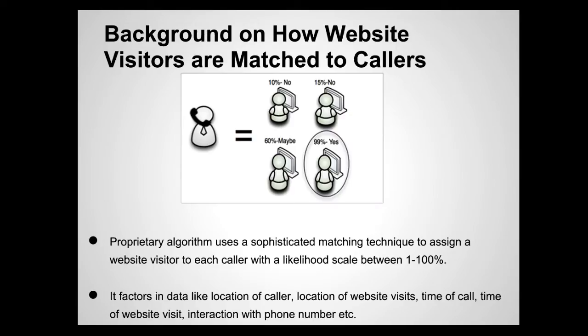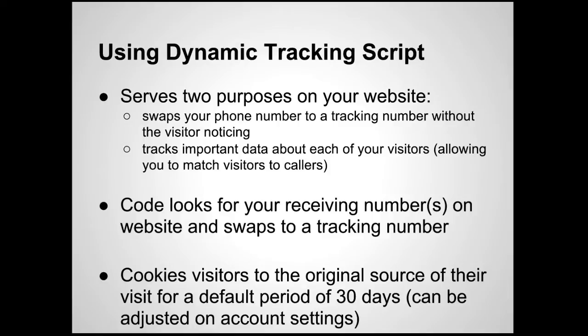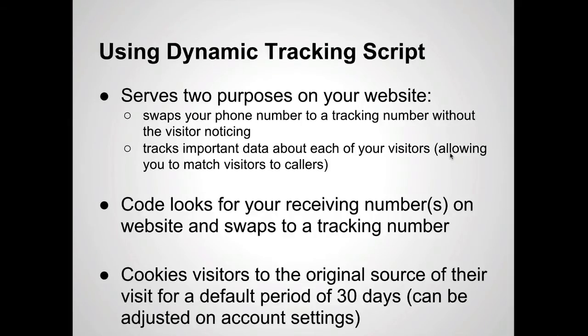When you're using a tracking number for an on-site source like Google AdWords, each time a phone call comes in through that tracking number, we're going to attempt to match a website visitor to each of your phone calls. The way that we do that is we have a piece of JavaScript code that goes on your website, and that JavaScript code does two things. The first thing is that it swaps the phone number on your website to be the correct tracking number for the channel that that visitor came through. The other thing the tracking script does is track your visitors and collect information like which search keywords they used to come to your site, which referring URL they came through, and lots of other information that you'll see surfaced in your reports. Our tracking script is going to look for the receiving numbers on your website and swap it to the correct tracking number for the channel of that visitor.